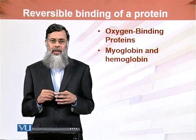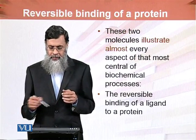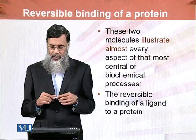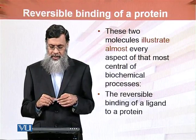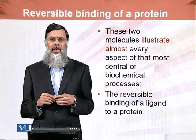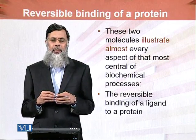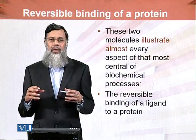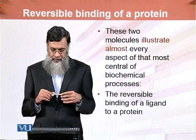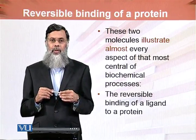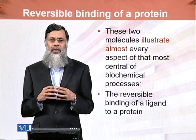Myoglobin and hemoglobin are a prototype of reversible binding of protein. These two molecules illustrate almost every aspect of the most central biochemical processes. Discussing hemoglobin and myoglobin gives about 90% of the understanding of reversible binding of proteins. We will also define how a protein binds to a ligand reversibly.